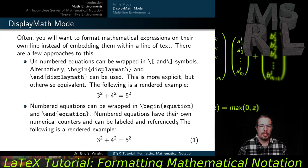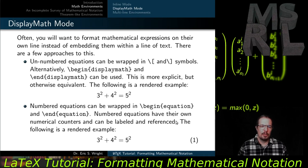Numbered equations are wrapped inside of the begin-equation and end-equation environment. Numbered equations have their own numerical counters, and they can be labeled and referenced using the \label and \ref commands that we've already used with numbered sections. In a rendered example, the mathematics looks the same, but there's an equation number that appears towards the margin of the document — in this case, equation one.